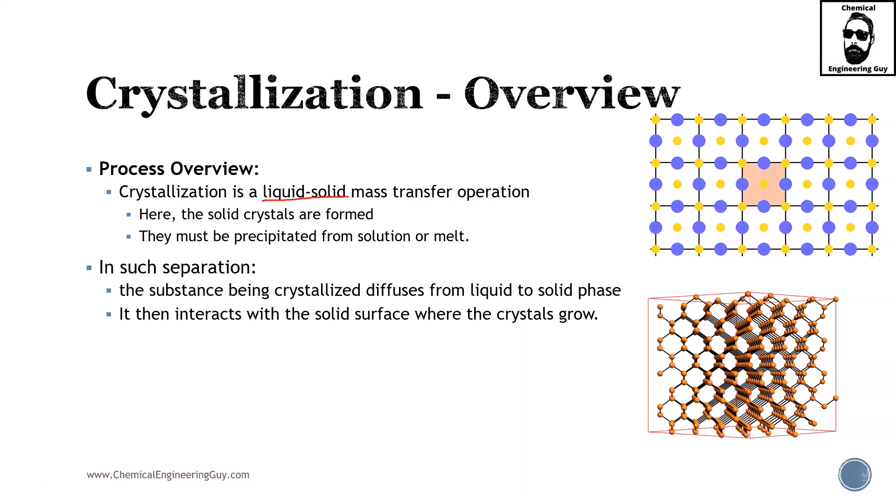Here, the solid crystals are formed. They must be precipitated from the solution or melt, more likely to be precipitated from solution, and they must be removed or separated. The substance being crystallized diffuses from liquid to solid phase. It then interacts with the solid surface where the crystals are going to be growing.